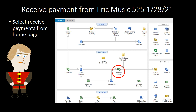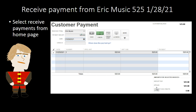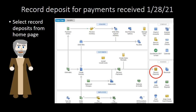Then we're going to have another receive payment with the same assumption — we had a prior invoice and received a payment in the mail. This one is for Eric Music. Once we enter the customer name, QuickBooks asks if this is the right invoice. We confirm and record the $525 check received. This again decreases accounts receivable and increases cash, but into the specific undeposited funds account.